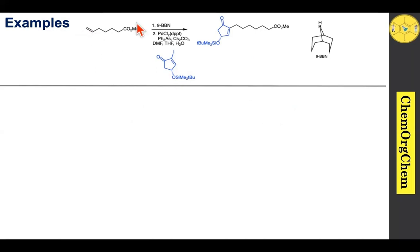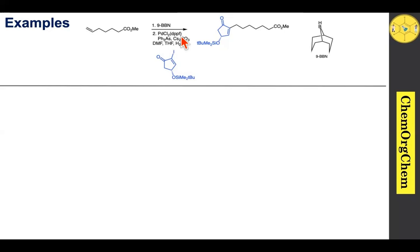Let's solidify our knowledge with more examples. Here an alkene reacts first with 9-BBN — a sterically hindered borane species — which undergoes anti-Markovnikov hydroboration to produce the corresponding boron reagent. In the presence of palladium catalysis, this boron reagent is then coupled with an iodo compound to produce the corresponding carbon-carbon coupling product.